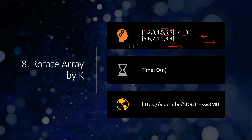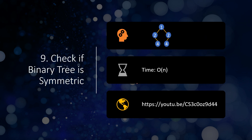When you right-shift by one step, 7 comes to the beginning, then 6 falls to the end, then 5, so after k equals 3 right shifts the result is 5 6 7 1 2 3 4. You have to do this in O(n) time, and the detailed solution link is provided in the description.